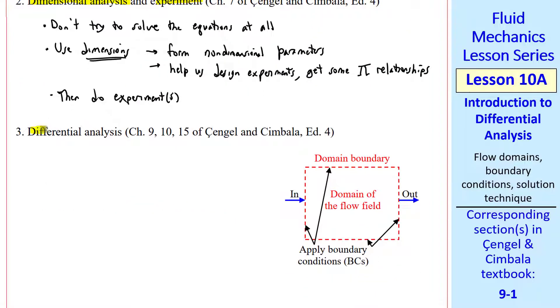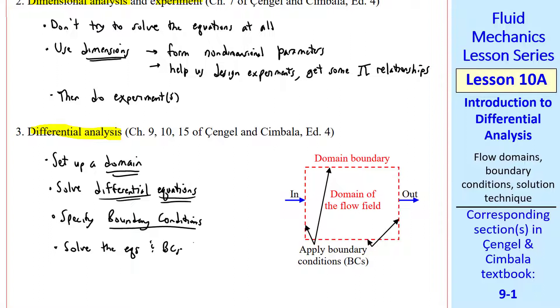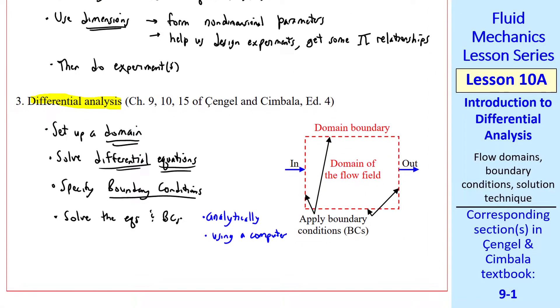The third technique is differential analysis. We set up a domain, which is like a control volume, but it's the region where we want to solve the flow field. We solve differential rather than integral equations. Similar to a control volume analysis, we have to specify boundary conditions along the domain boundary. Then we solve the equations and the boundary conditions, either analytically for simple problems, or using a computer where we model the flow. The technique is called computational fluid dynamics, or CFD.